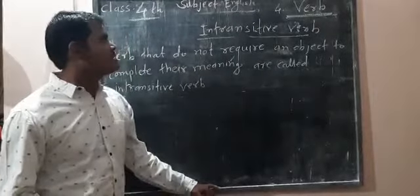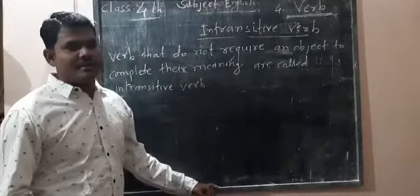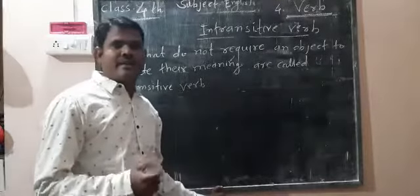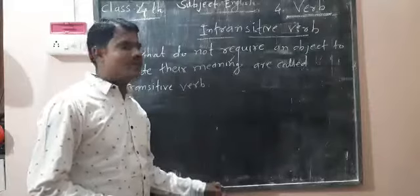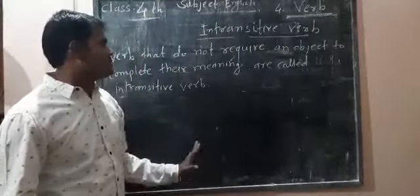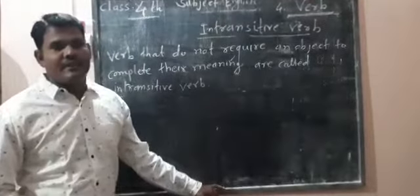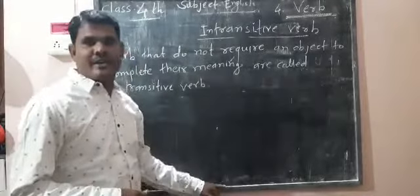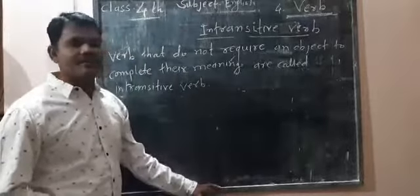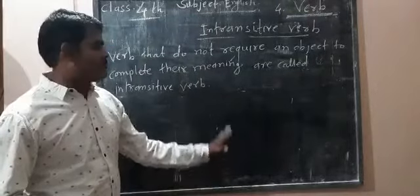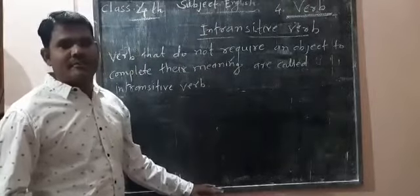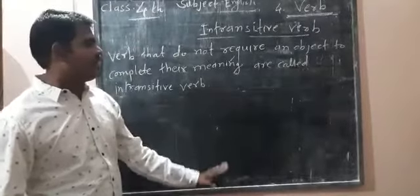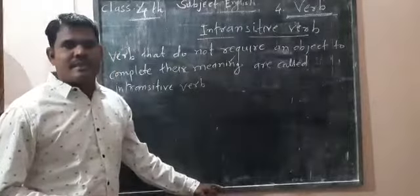The first type was transitive verb. Transitive verb means the verbs that need an object to complete the meaning of a sentence. An object gives the answer to what, when, how, and then we find the meaning of that sentence. Therefore, the verbs need an object.